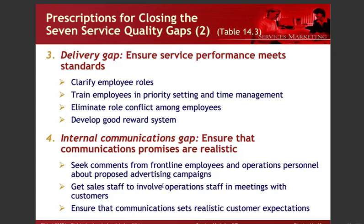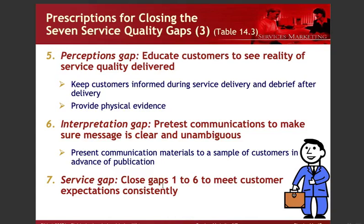Sales and operations must communicate well because sales interacts directly with customers while operations manages internal processes — they must share experiences so problems can be solved together. For gap five, the perception gap, educate customers to see the reality of service quality delivered, keep customers informed during service delivery, and provide physical evidence. For gap six, the interpretation gap, pre-test communications to ensure the message is clear and unambiguous, and present materials to a sample of customers before publication. Gap seven, the service gap, is closed by addressing gaps one through six to meet customer expectations.